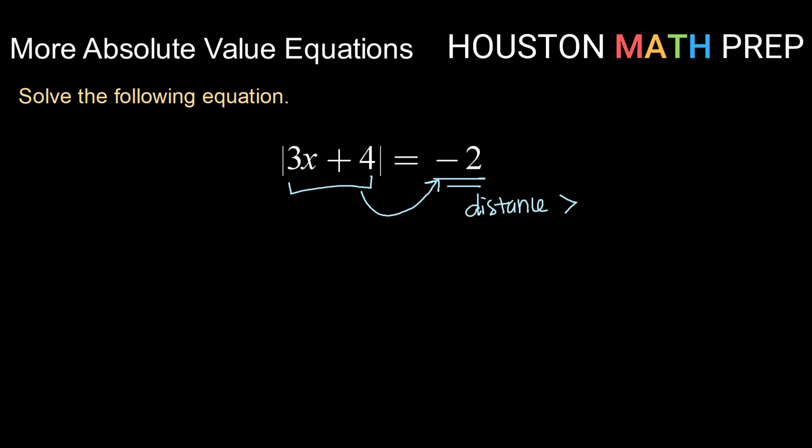And distance is always greater than or equal to 0. So, that means we cannot have an absolute value equation equal to a negative number once the absolute value is isolated.